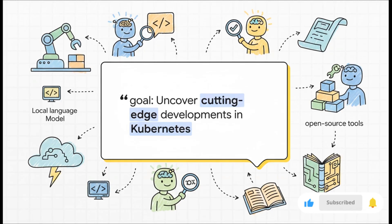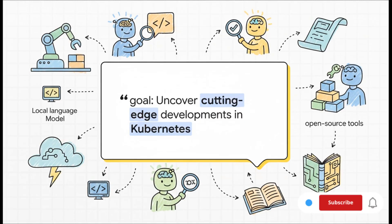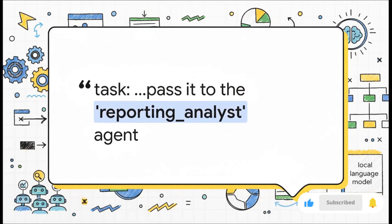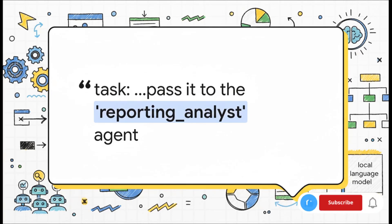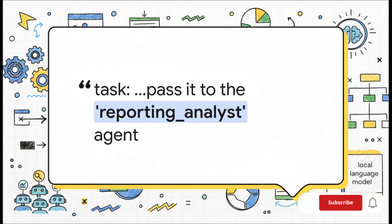And when I say define their roles, I'm not talking about writing a bunch of complicated code. Look at this — this is from a simple text file. We just give our first agent, the researcher, a goal written in plain English: 'Uncover cutting-edge developments in Kubernetes.' That one little line tells the agent everything it needs to know about its purpose. In the task file for our researcher agent, the very last instruction is basically to take what it found and pass it over to the reporting analyst agent. This is how you build a workflow — it's like an assembly line, where one agent's work becomes the next agent's starting point.